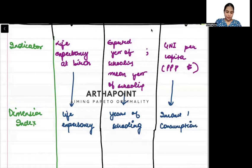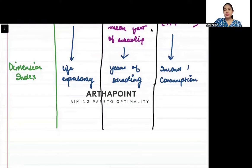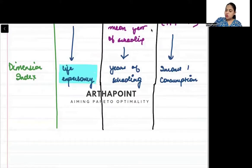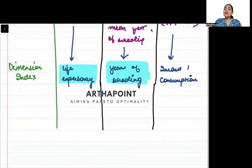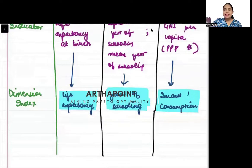Now, how is this index calculated — what is the difference? Once you calculate the life expectancy index and the years of schooling index, it is the same as HDI up to this point. The years of schooling index is calculated in exactly the same way as in HDI. The income/consumption index is also calculated using GNI in exactly the same way as in HDI.